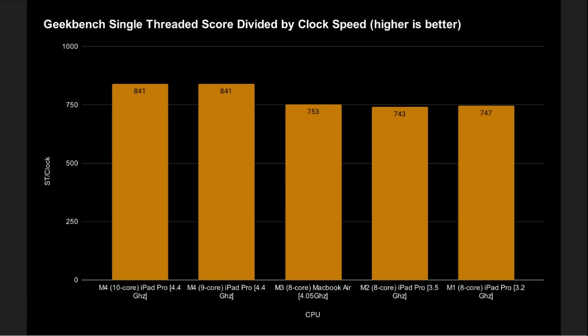Normalizing for clock speed, the M1, M2, and M3 single-threaded scores were very, very close — 747, 743, and 753 respectively. These are average scores, and what really happened across M1 to M3 is that Apple bumped up the clock speed and made some micro-architecture changes while moving to the next nanometer process node. However, we can see a very big leap when we come to the M4. Even accounting for the higher clock speed, the actual micro-architecture performance is much better — so the M4 represents a genuine leap in Apple's engineering with the move to ARM v9.